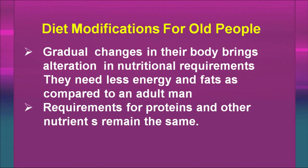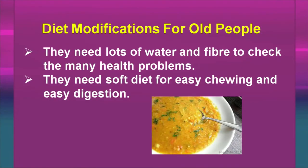Now we will also talk about older people, who require some changes in their diet due to changes in their physiology. Gradual changes in the body bring alterations in nutritional requirements — they need less energy and fat compared to when they were adults. The requirement for protein and other nutrients remains the same. They can have lots of water and fiber to address many health problems, but they need soft diet for easy chewing and easy digestion.